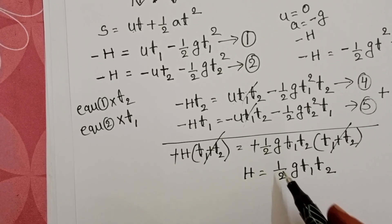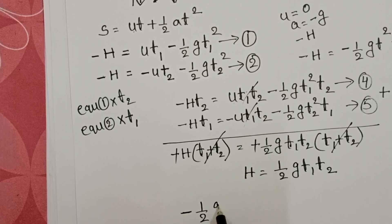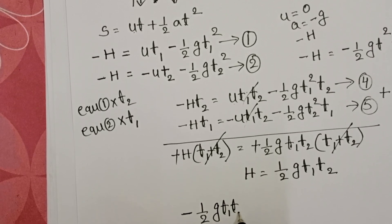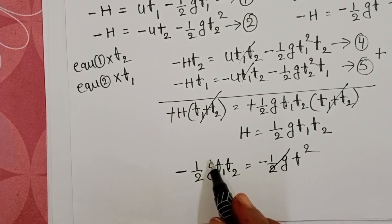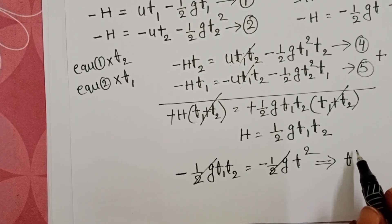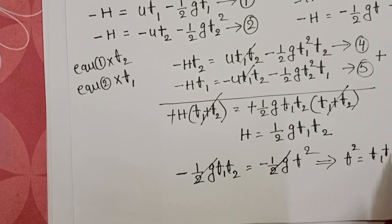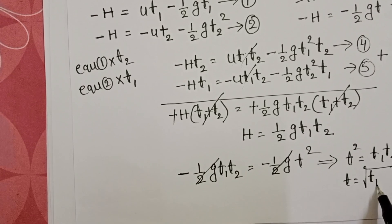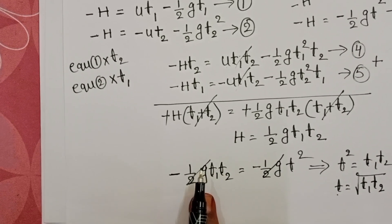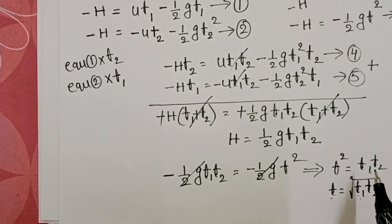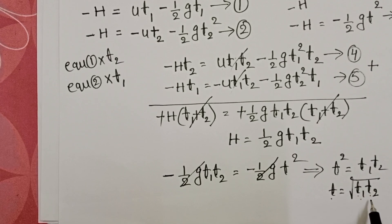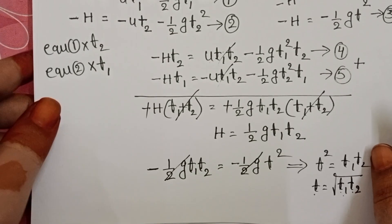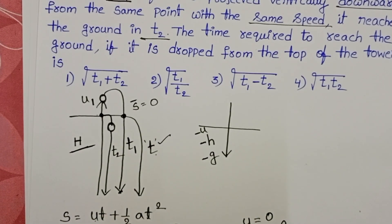Now substitute H = ½GT1T2 into equation 3: −½GT1T2 = −½GT². The −½G terms cancel on both sides, leaving T² = T1T2, so T = √(T1T2), where T is the time taken by the freely falling body, T1 is the time taken by the upward-projected body, and T2 is the time taken by the downward-projected body. The time taken by the freely falling body to reach the ground is √(T1T2). The fourth option is correct.